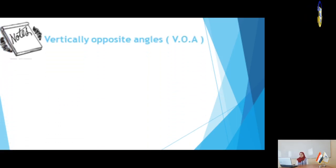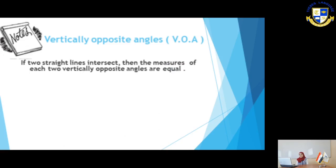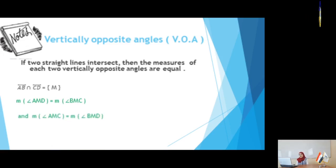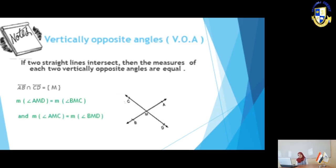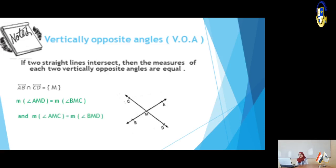Vertically opposite angles. If we have 2 straight lines intersecting at a point, as shown in the figure — if straight line AB intersects straight line CD at point M — then we have 2 pairs of vertically opposite angles, and the vertically opposite angles are equal in measure. Measure of angle AMC equals measure of angle BMD, and measure of angle AMC equals measure of angle BMG.